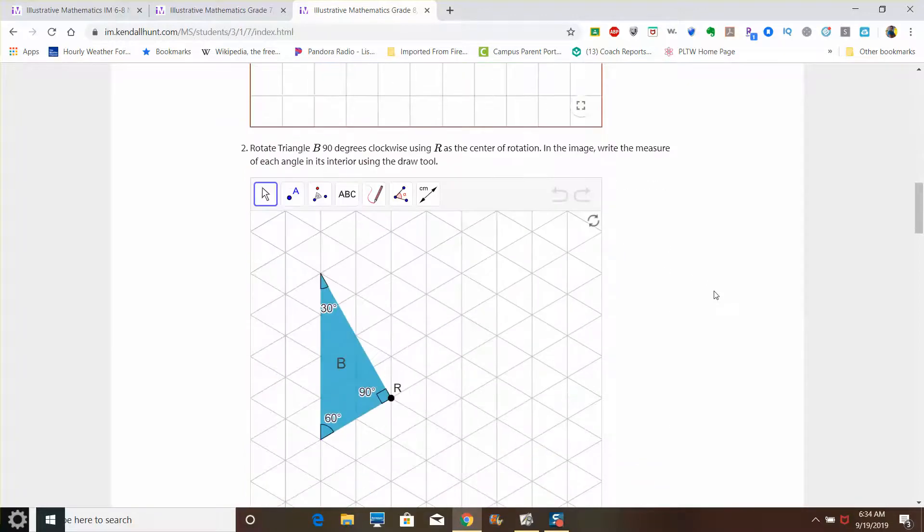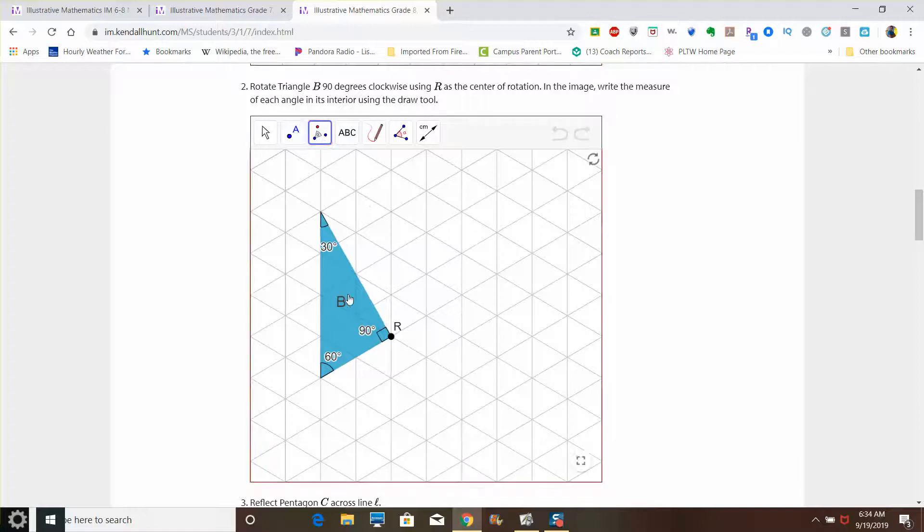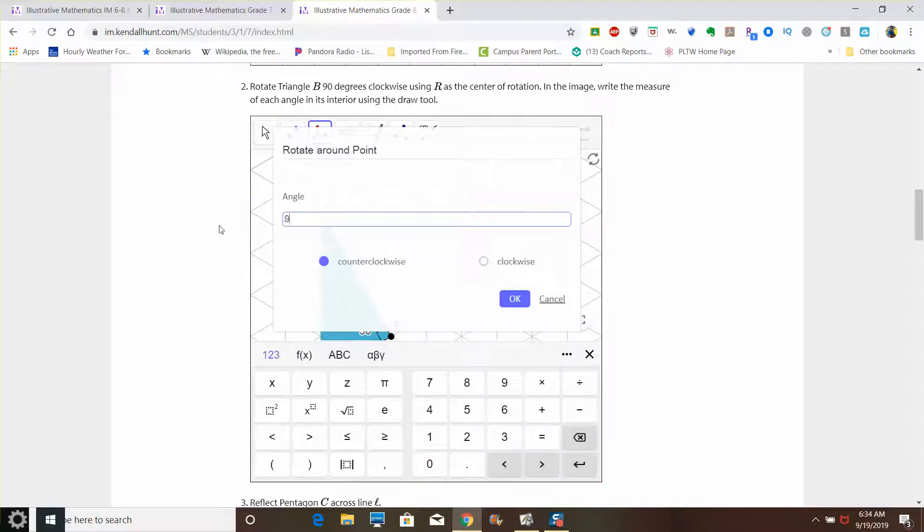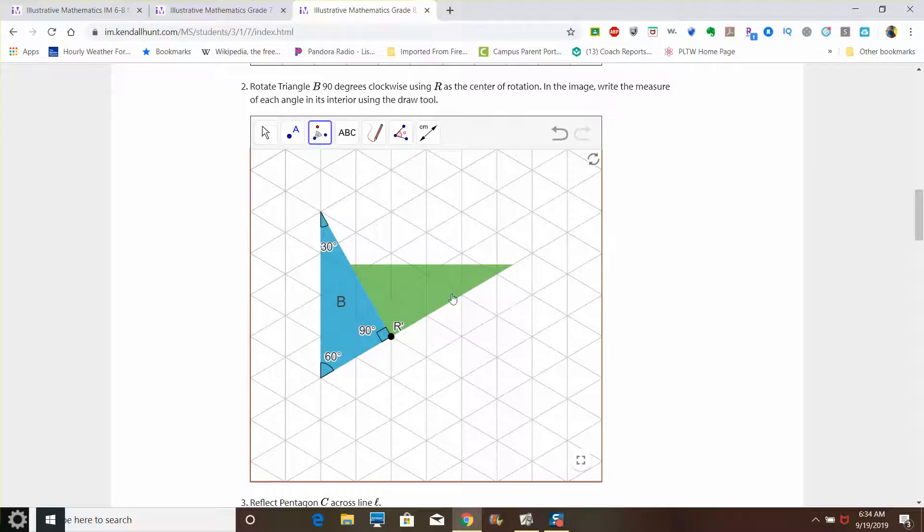So that means there's something about translations that's important for this lesson. Let's go ahead and look down now to this next object, which is we're going to do a rotation. We're going to write the measure of each angle in the interior using the draw tool. Here we've got this triangle. We're going to use the rotate by point, select the object, select the point of rotation, which in this case is R, and we're going to rotate it 90 degrees clockwise.